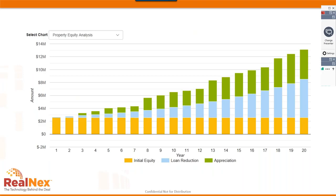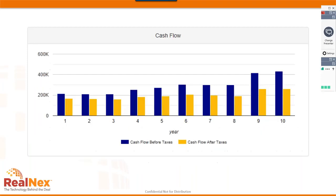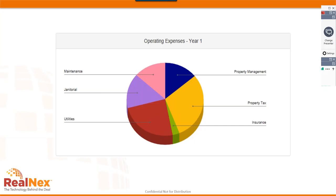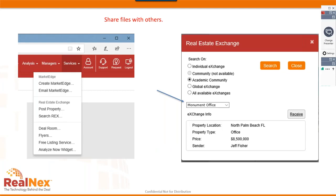The program also generates graphs. One shows equity buildup over time — your initial equity stays constant, while additional equity builds through loan reduction (blue) and property appreciation (green). This illustrates why we invest in real estate: tenants pay down the loan while the property appreciates. Other graphs show before-tax and after-tax cash flows each year, and a breakdown of operating expenses by category.